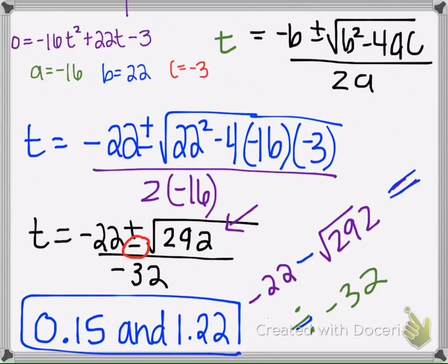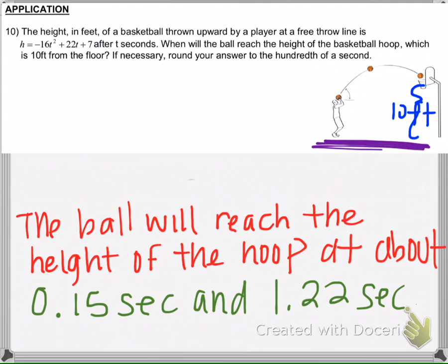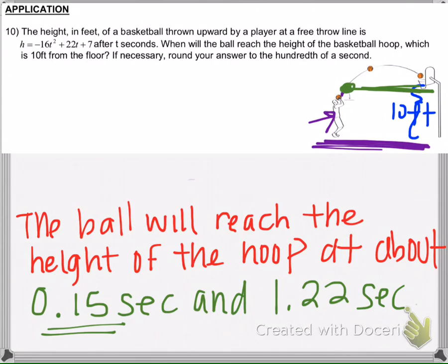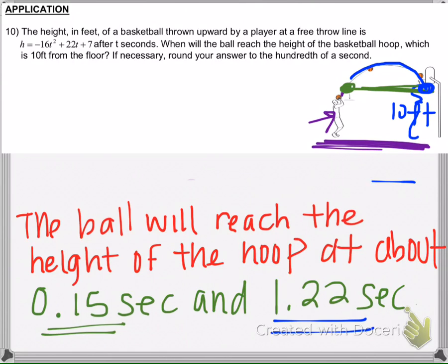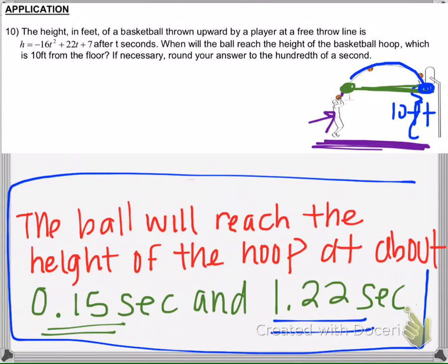So we get two answers — let's talk about why. Imagine the basketball player releases the ball. If 10 feet is here, the ball will be at 10 feet at 0.15 seconds on the way up, then the ball makes a parabola and comes back down to 10 feet again at 1.22 seconds. There are two points in time when the ball will have a height of 10 feet — that's why two answers make perfect sense.